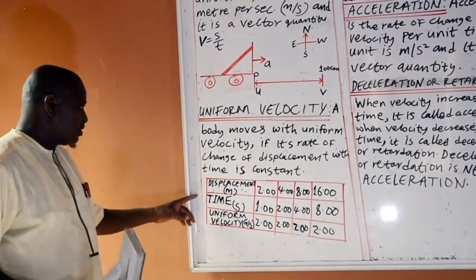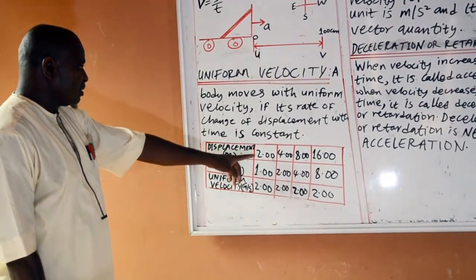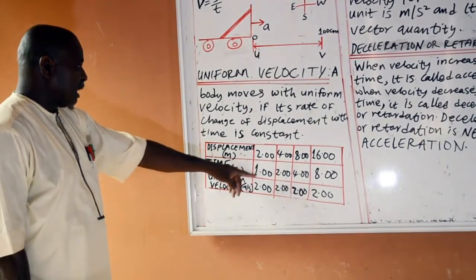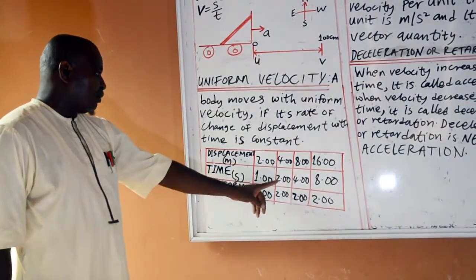For instance, this table. The displacement in meters for the first aspect is 2 m. It takes 1 second. Then, 4 m takes 2 seconds.